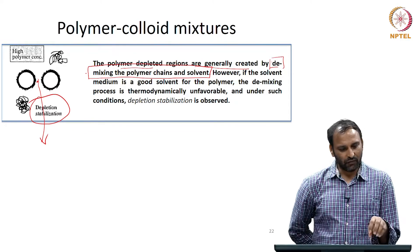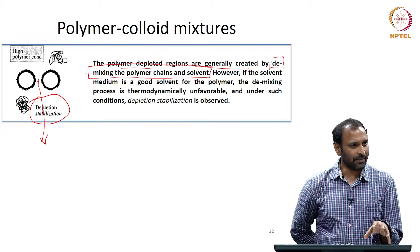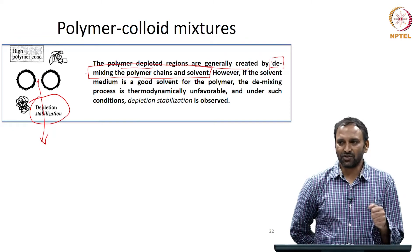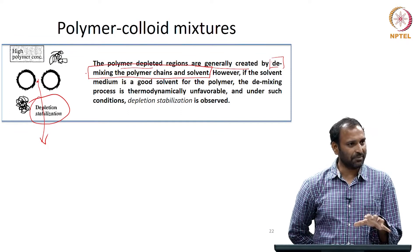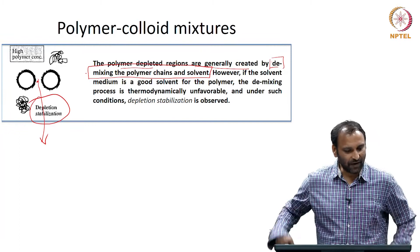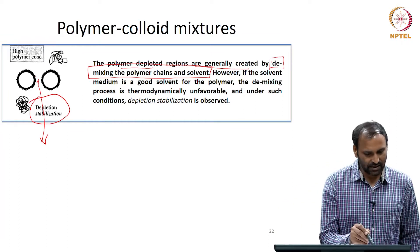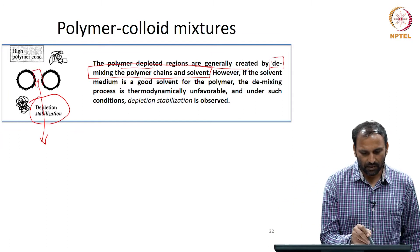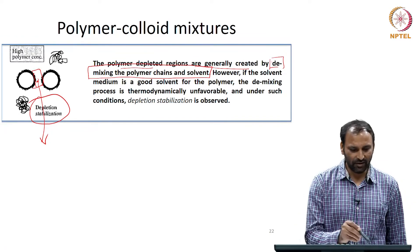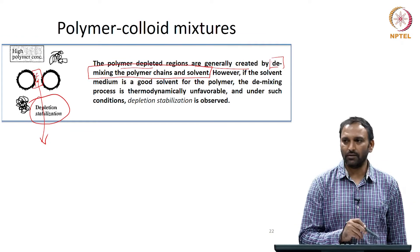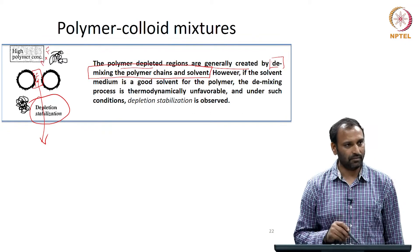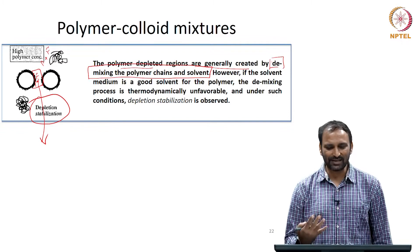When the polymer goes out of the gap, we can think about that as a demixing. Initially, the solvent and the polymer were in a mixed state — there was a homogeneous solution. Now, the fact that the polymer left the gap means you have a region of pure fluid and a region of polymer plus fluid. You can think about this as a demixing process.